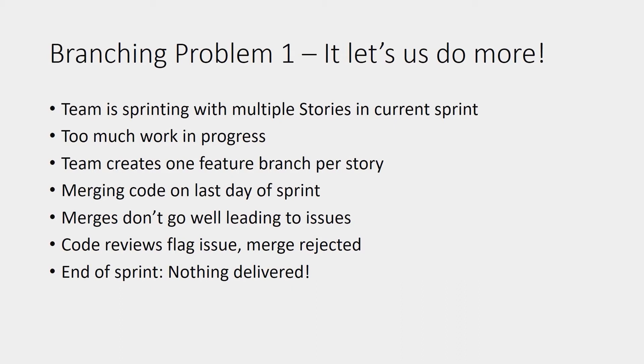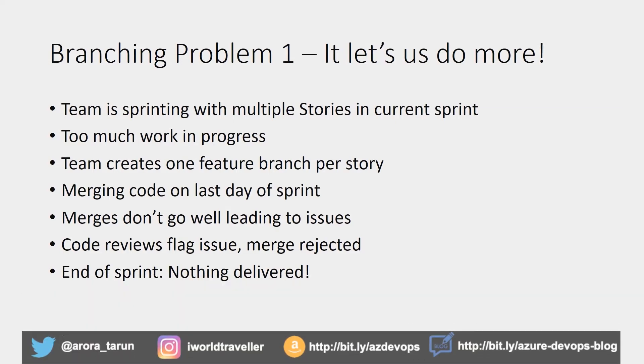On the last day, when they start to merge the changes back, code reviews flag issues and merge conflicts arise. At the end of the sprint, nothing's delivered. This is a classic example of using Git branching to create more parallel work streams and then paying the price of not being able to roll up those changes in time to deliver the features committed to business users.